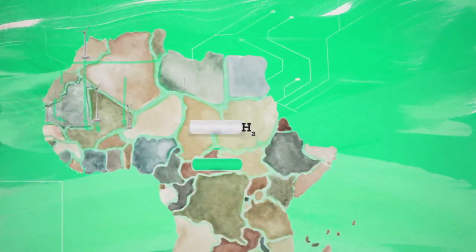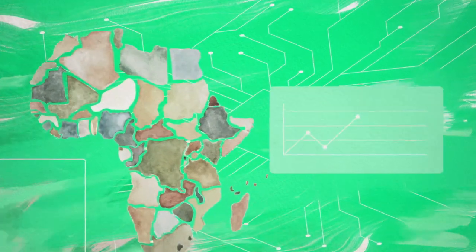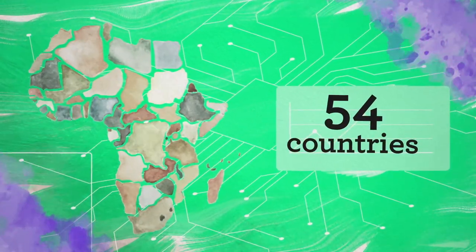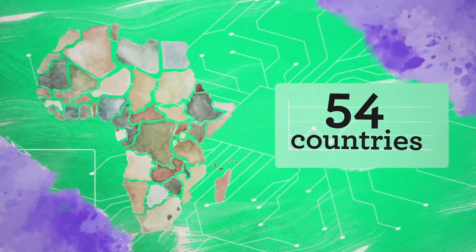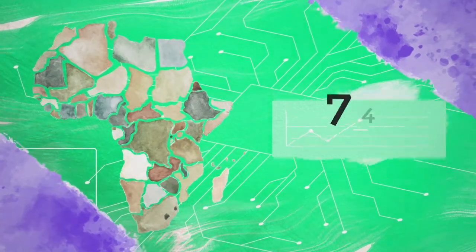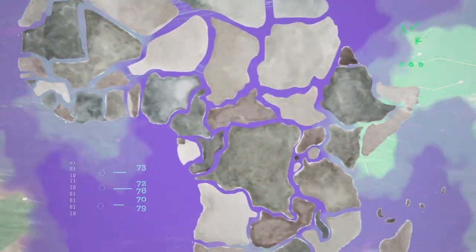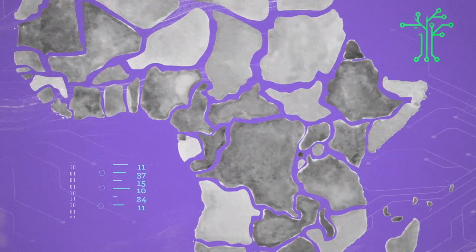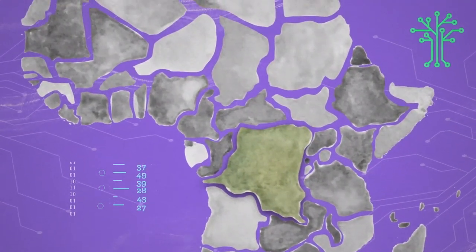Africa is often addressed as a singular block, without breaking down the fact that there are 54 different countries that each have their own story. When addressing the green transition, it is important that the developing world is not approached in a one-size-fits-all manner.